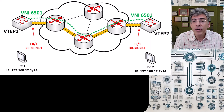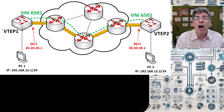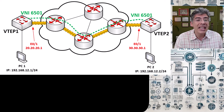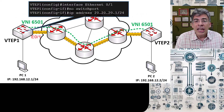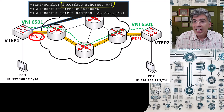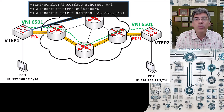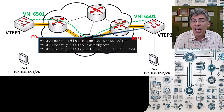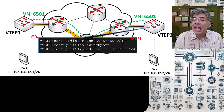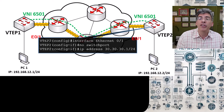To start off, we'll first need to configure the VTEPs such that their interfaces connected to the underlay network are correctly set up. To do this we can issue the following commands. Here we can see in VTEP1 that we are configuring the Ethernet0/1 interface. The 'no switchport' command converts the port to a Layer 3 port just like we would have on a router, and once that is done we can assign an IP address to that port. We configure the same thing on the underlay port of VTEP2 as well. Now these two VTEPs should be reachable to each other over Layer 3 over that underlay network — in other words they should be able to ping each other.